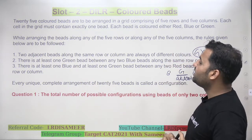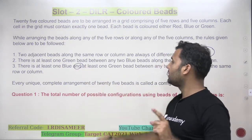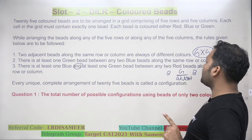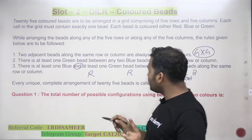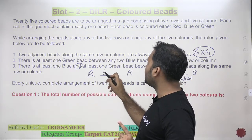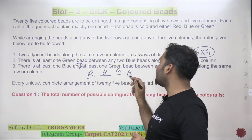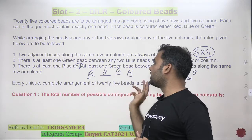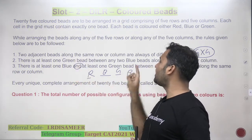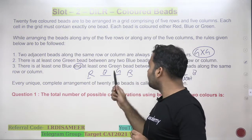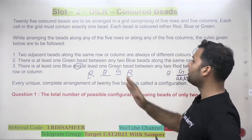Rule 3: there is at least one blue AND at least one green — note the word 'and' — between any two red beads along the same row or column. So if I am placing two red beads along the same row or column, I need to place at least one blue and at least one green between them. That means the gap between the two cells having red beads will be at least 2, because I need to place one blue and one green.